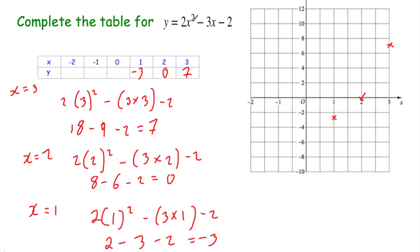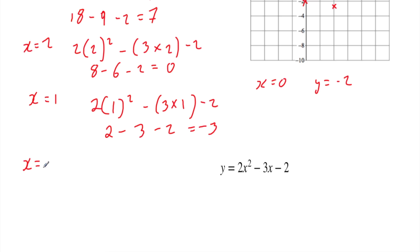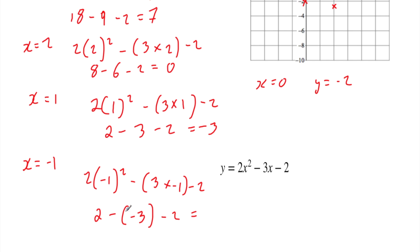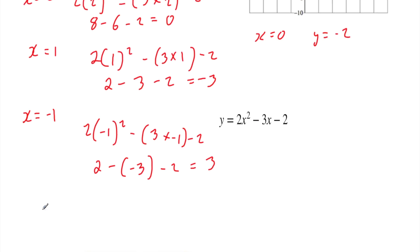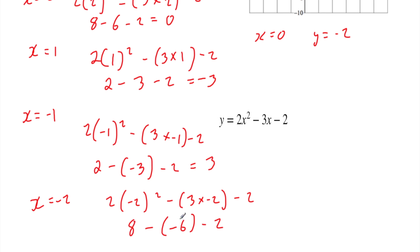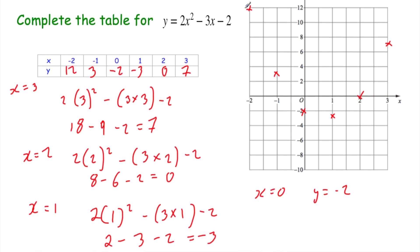When x equals 0: 0 squared doubled is 0, minus 0, minus 2 equals negative 2. When x equals negative 1: negative 1 squared is 1, doubled is 2, subtract 3 times negative 1 which is negative 3 (so subtract negative 3 means adding 3), giving 5, minus 2 equals 3. When x equals negative 2: negative 2 squared is 4, doubled is 8, subtract negative 6 gives 14, minus 2 equals 12. Let's draw the parabola through those points.